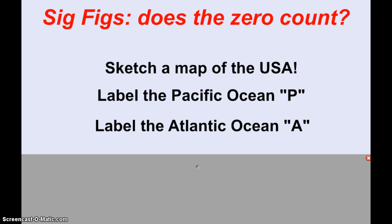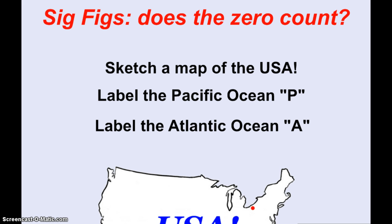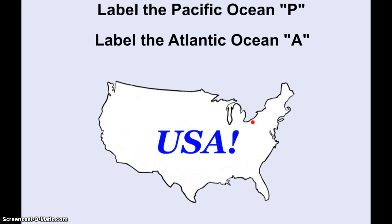We have all these rules on sig figs. The first rule is, if it's a non-zero digit, it's definitely significant. So all the other rules are based on whether or not we count the zero as significant, or if it's just being used as a placeholder. So a simple way to try and remember that, remember all the rules, yes, you can memorize the rules, or we can kind of do this little activity. So sketch a map of the United States, and label the Pacific Ocean P, and the Atlantic Ocean A. So here we have a lovely, this is my hand-drawn sketch of the United States. So hopefully you remember that the Pacific Ocean is over here, the Atlantic Ocean is over there.